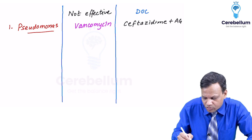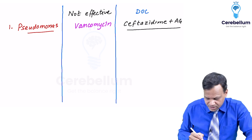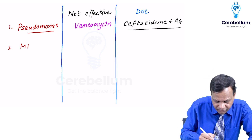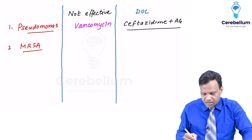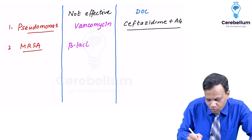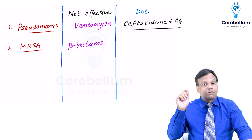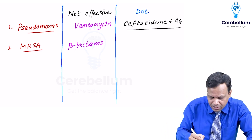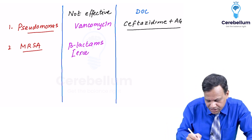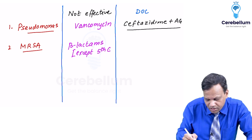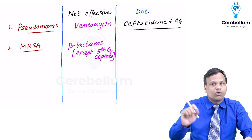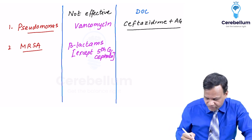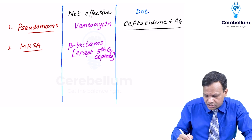Ceftazidime plus aminoglycoside combination is the drug of choice. The second topic is which drug is not effective against MRSA — Methicillin-resistant Staph aureus. Remember, no beta-lactam is effective: no penicillin, cephalosporin, carbapenem, or monobactam. One exception: fifth generation cephalosporins — ceftaroline and ceftobiprole — are effective against MRSA. No other beta-lactam is effective. The drug of choice for MRSA is vancomycin.